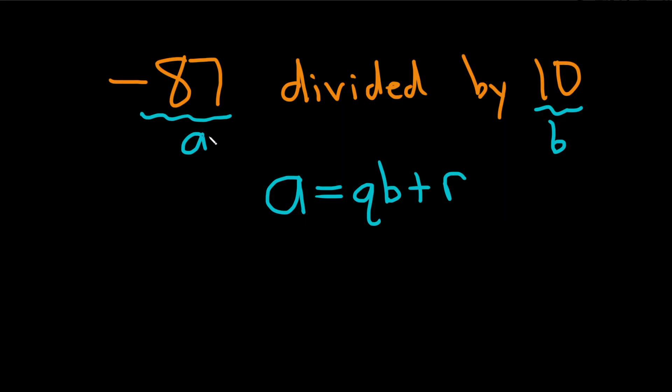So now we're actually going to perform the division. We'll do negative 87 divided by 10. I'm going to put this in my calculator: negative 87 divided by 10. I got negative 8.7.